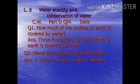Question number 1: How much of the surface of earth is covered by water? Answer: Three fourths of the surface of earth is covered by water. After writing the answer, leave one line blank then write question number 2.